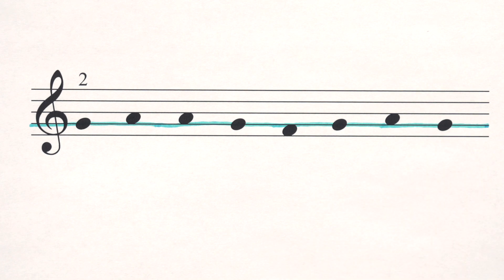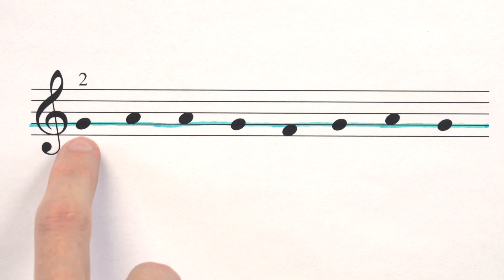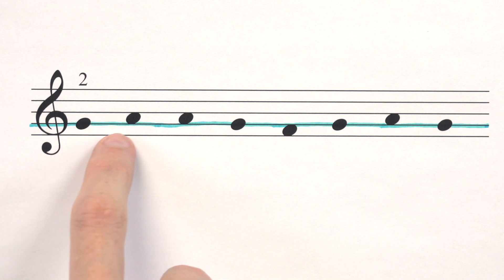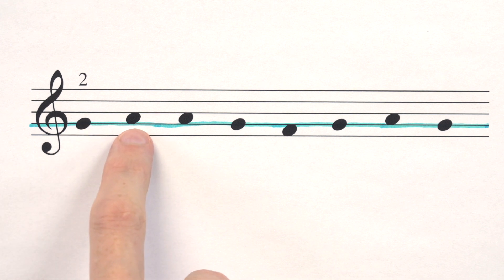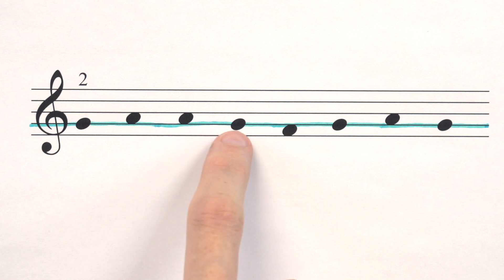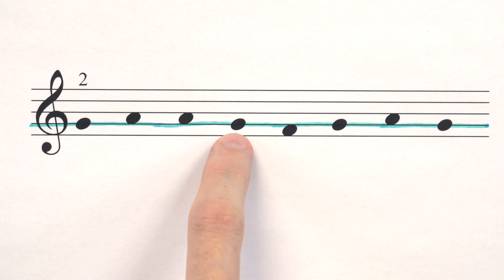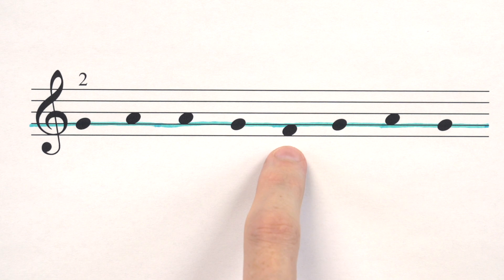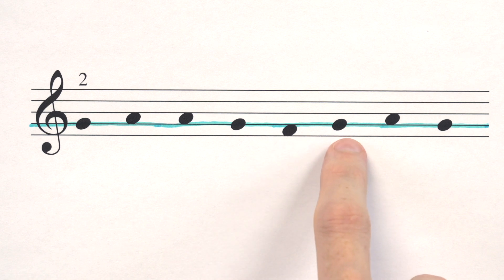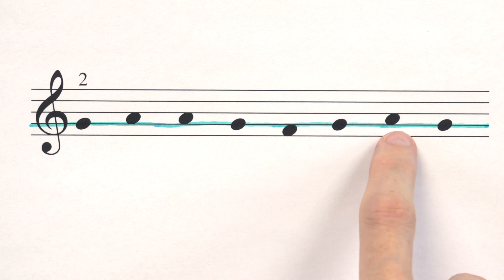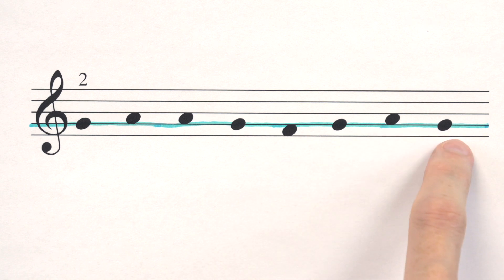Great, now let's try to say the letter names. Can you say it with me? We've got G, then it steps up to A, A, then steps down to G — now we're on the G line again — then F, G, A, G.